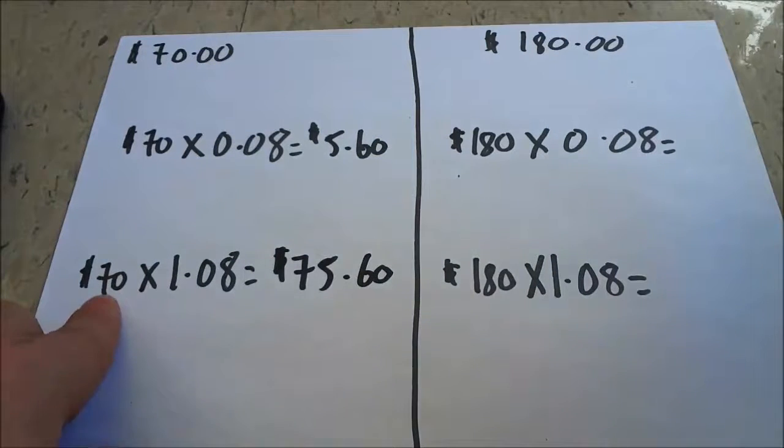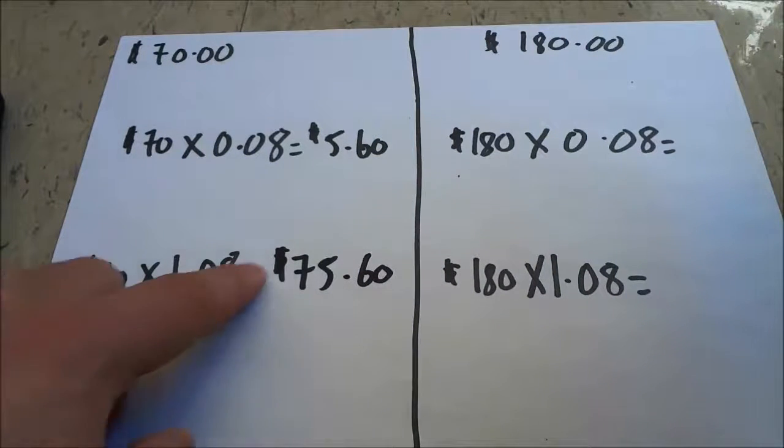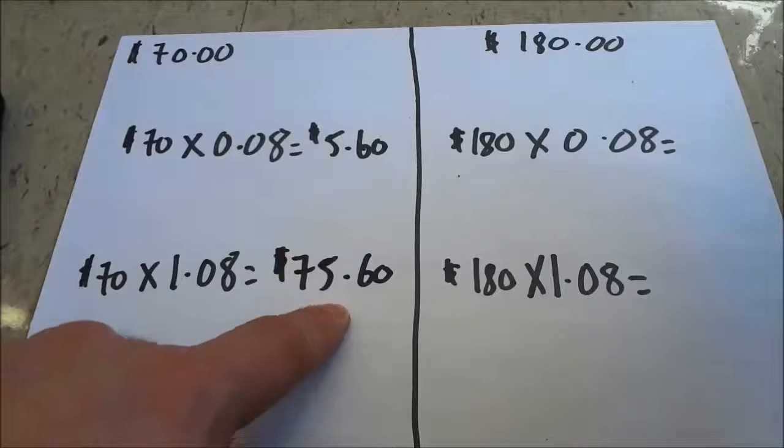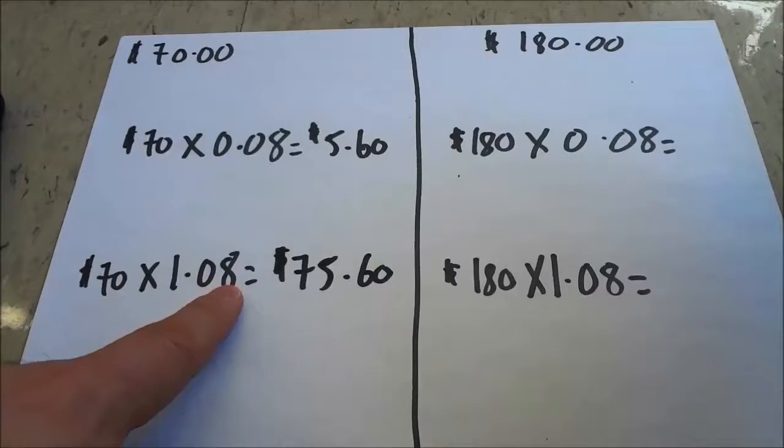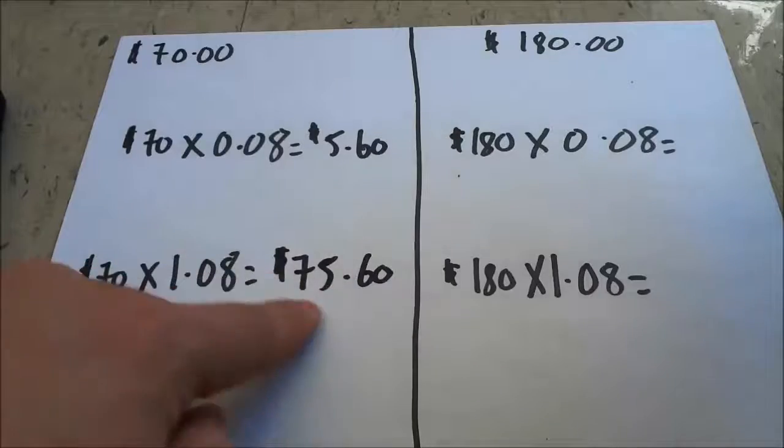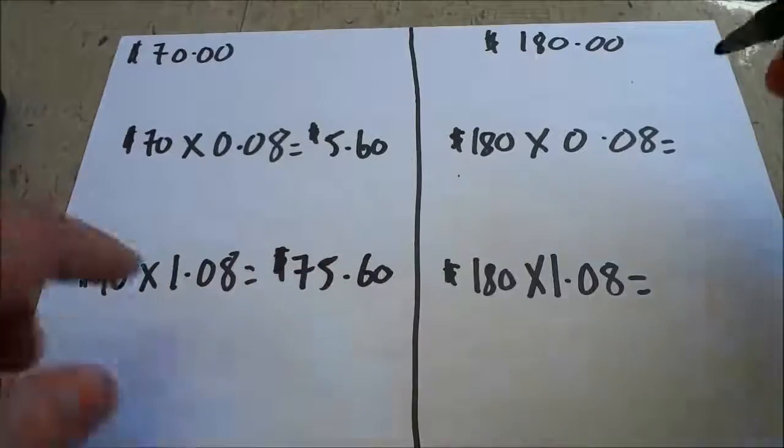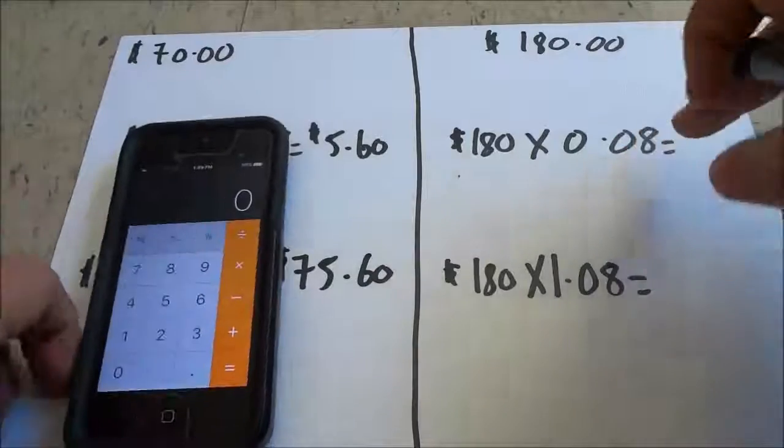That is the total cost of the original price of the product plus the sales tax. That is what I'll have to pay if I'm buying a $70 product at 8% sales tax. Now we're just going to do the same thing for the other example,